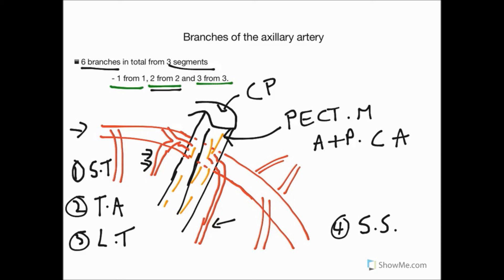So there we go — we've covered all the branches from both the subclavian and the axillary artery, and as we've gone along we've pointed out those that supply the breast. See you again soon.